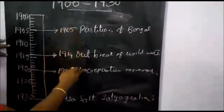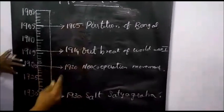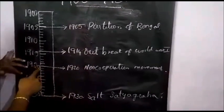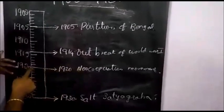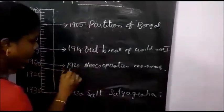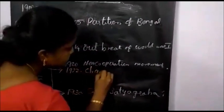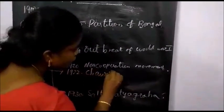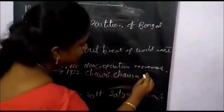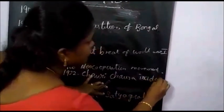Then the next one — any event you want to write. For example, starting from 1920: 1921, 1922 — the event is the Chauri Chaura incident.